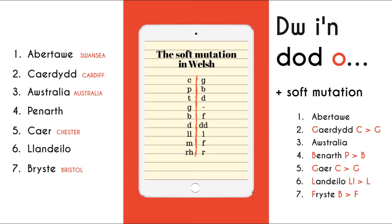And lastly, Bristol. The Welsh for Bristol is Bryste. Is B on the list? Yes, and it changes to F. So 'I'm from Bristol' would be, Dwi'n dod o Fryste. Well done — da iawn, we got there. Now, I'm not asking you to memorise this table. I just want you to be aware of these peculiarities of the Welsh language. The main thing at this stage is that you know how to say where you are from, and that there are mutations in Welsh that we need to be aware of. You may want to have a little break before we move on to the next section.